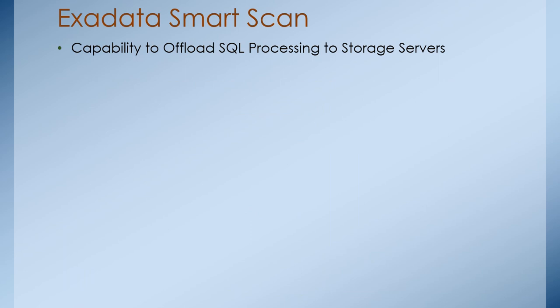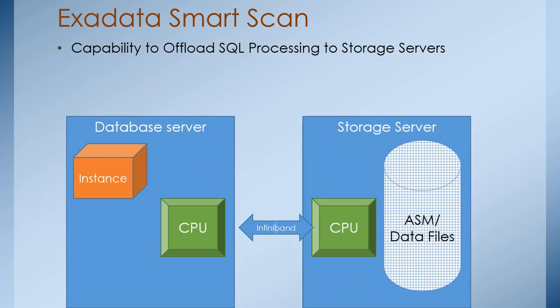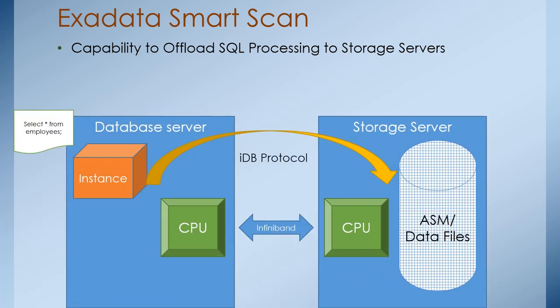Now let's see what is the Exadata Smart Scan. The Exadata Smart Scan is the capability to offload SQL processing from the database server to the storage server. For example, when running a SELECT statement on an employee table, that operation is directly forwarded to the storage server through the IDP protocol. The storage server identifies the required blocks holding the employee table data and pulls the data back to the database server, reducing resource contention on the CPU and improving performance.